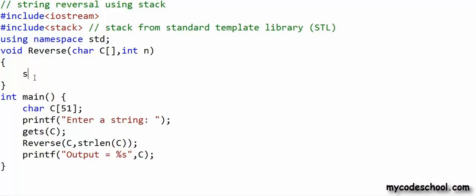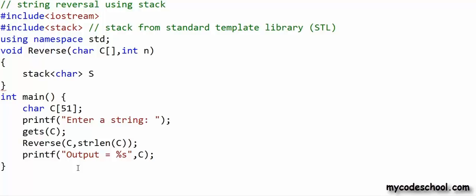I will use hash include stack and now I have a stack class available. To create an object of this class, I write stack, within angular brackets the data type, then after space the name. With this one statement, I have created a stack of characters. This n in the signature of reverse function is number of characters in string. This array, as we know, in C or C++ is always passed by reference through a pointer. This C followed by brackets is alternate syntax for asterisk C, interpreted like this by the compiler.